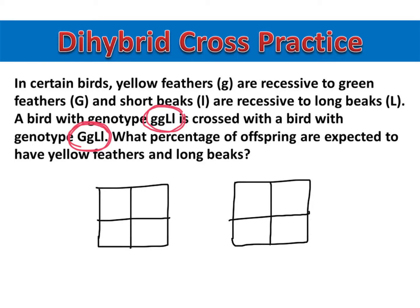My first Punnett square is going to be about feather color. My first bird is homozygous recessive, so little g, little g. And my second bird is heterozygous, so big G, little g.